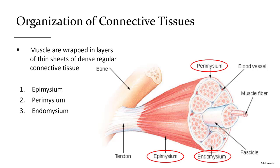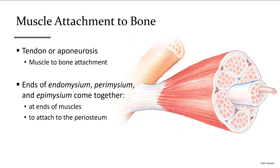The end portions of all three connective tissue layers extend beyond the muscle and fuse together — this is the tendon. This fused bundle of dense regular connective tissue binds with the connective tissue on the surface of the bone, the periosteum, to attach the muscle to the bone.